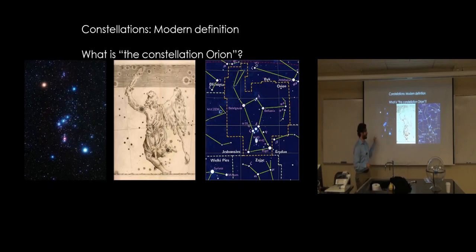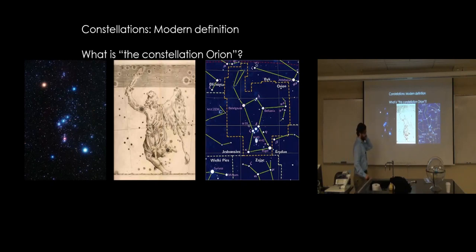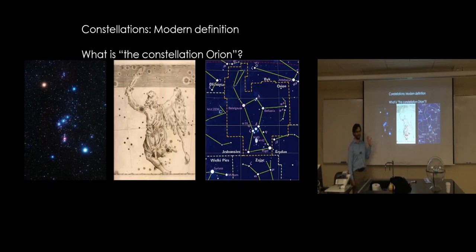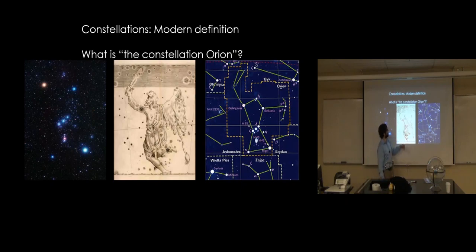The first thing — I kind of warned you about this last week — is which one of these is a constellation? You were able to say a constellation and you all knew what each other meant. So what is the constellation Orion? Is it this particular collection of bright stars? Is it the stick figure they make, those green lines? Or is it this beautiful picture? He doesn't have a lion skin — now he's turned backwards and holding a club. So which one is it, or none of the above?